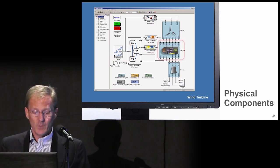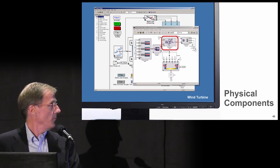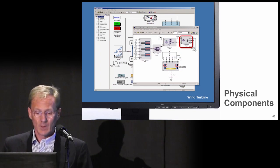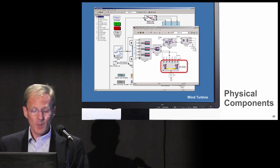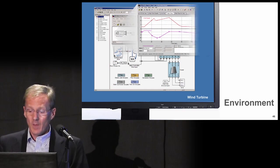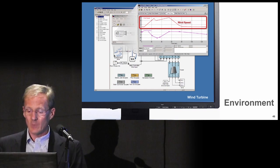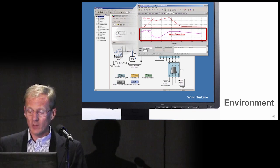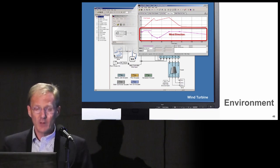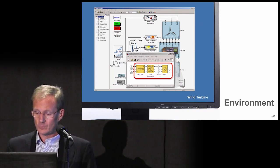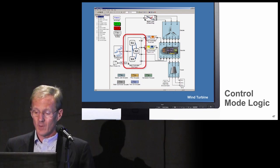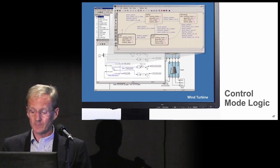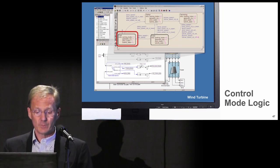Let's open up the nacelle. Here we find a gear train, a generator, and actuator models. Let's open up the wind input — the input will be a wind speed that ramps up and settles back down, with specified changes in wind direction. The power grid includes the transmission line. We can look now at the main controller — this is a Stateflow model that controls the turbine. It has separate modes of park, startup, generating, and braking.